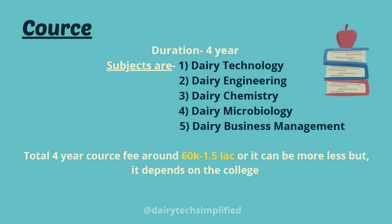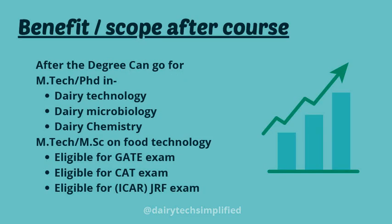The total four-year course fee is around 60,000 to 1.5 lakh rupees, or it can be more or less — it generally depends on the college. Now let's talk about what you can do after completing this course.